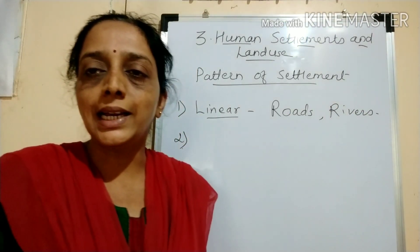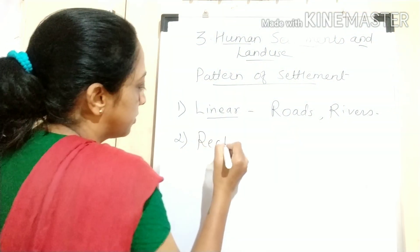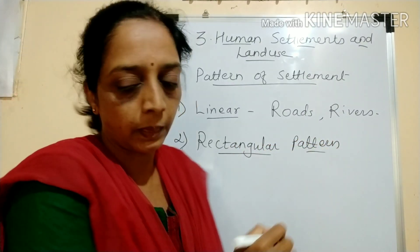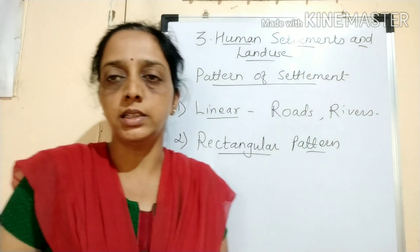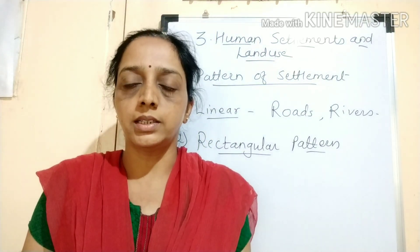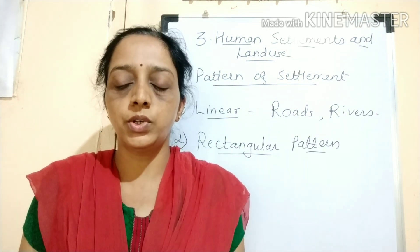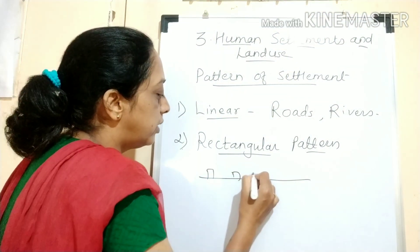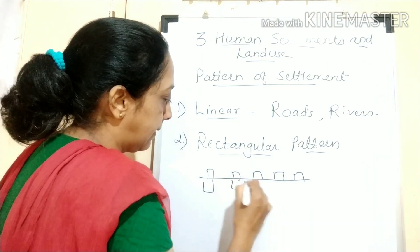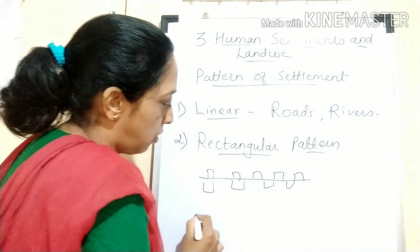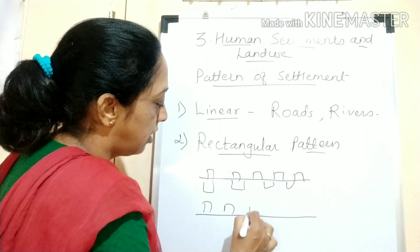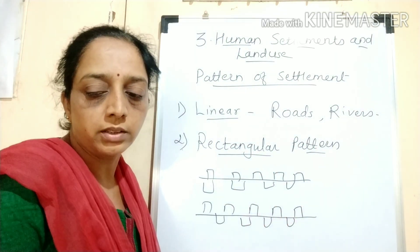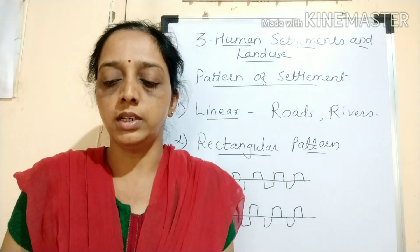The second pattern is rectangular pattern. The rectangular pattern occurs when two straight lines are parallel to each other. For example, if one road is going and settlements are located along it, parallel roads are also there and the settlements are located there as well. So this type is called rectangular pattern.